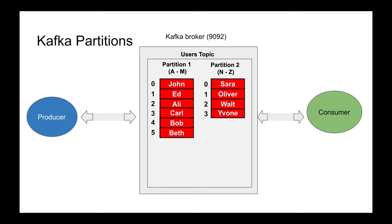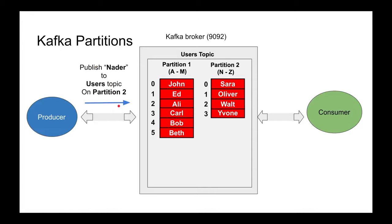If a producer wants to publish user 'Nader' to the users topic on partition two — because N falls between N and Z — the producer has to figure out which partition to publish to. That's the trade-off for scalability. Once you write it to partition two, you get a new position. That position is returned to the producer — say the current position on partition two is four.